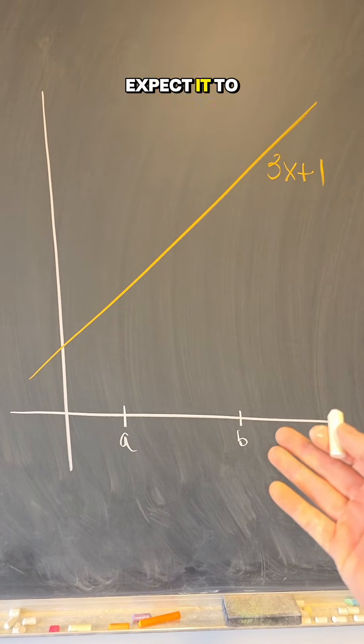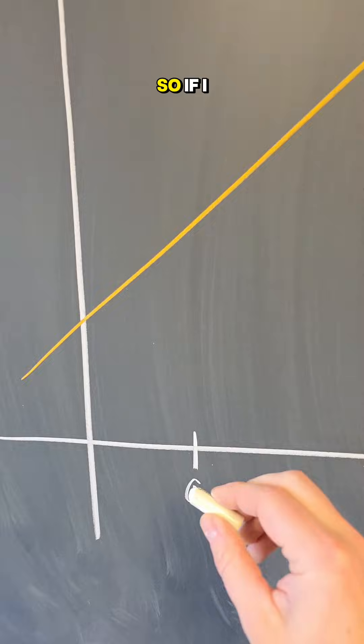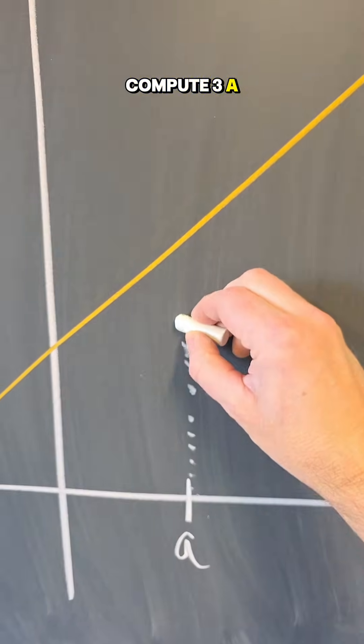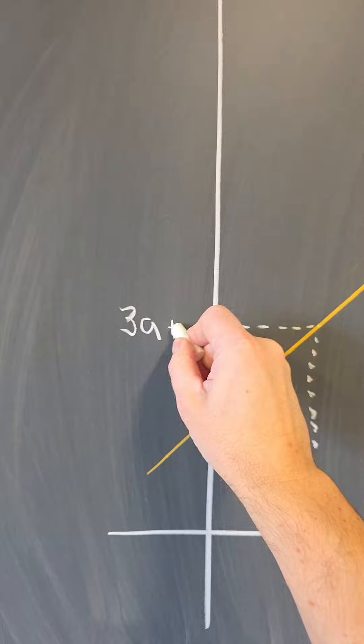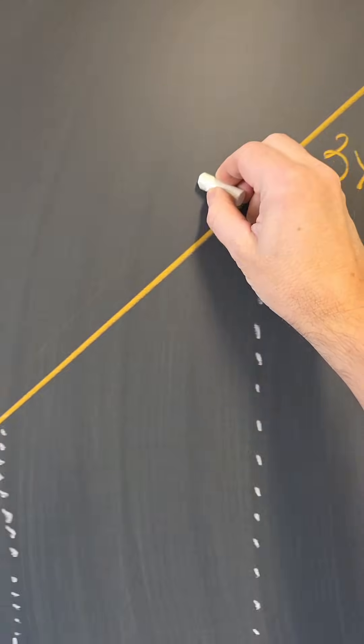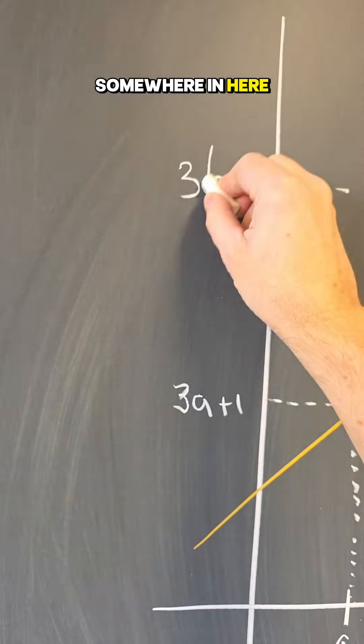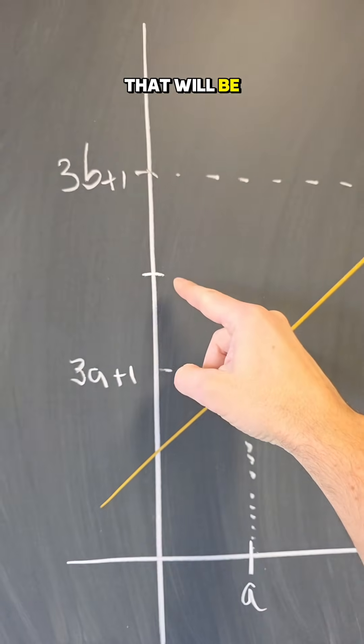However, I do expect it to work for a function such as 3X plus 1. Let's try it. So if I compute 3A plus 1, that will be somewhere here. If I compute 3B plus 1, that will land somewhere in here. And if I compute the average of the two, that will be here.